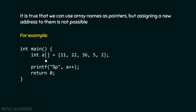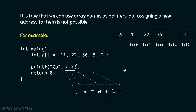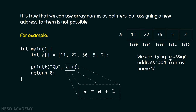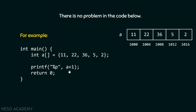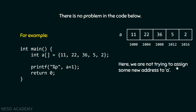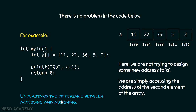For example, if we write a++, we are not only incrementing 'a' but also assigning the new address to it. a++ means a = a + 1, so we are assigning the next address to 'a', which results in an error. We are trying to assign address 1004 to array name 'a', which is not allowed — we cannot change the base address. We must understand the difference between accessing and assigning: (a + 1) simply accesses the second element's address, whereas a++ tries to assign a new address to 'a', which is wrong.